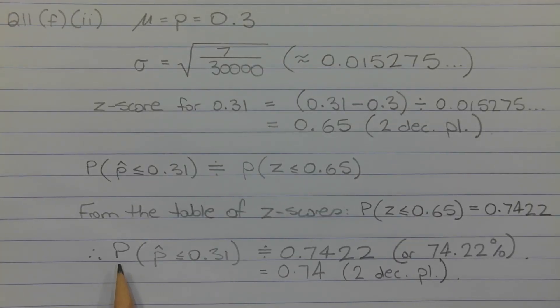Therefore, the probability that the sample proportion is less than or equal to 0.31 is approximately equal to 0.7422, which equals 0.74, correct to two decimal places.